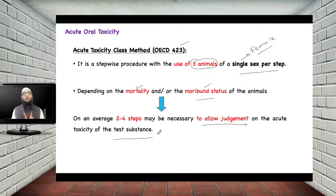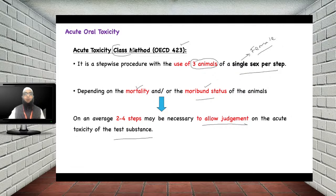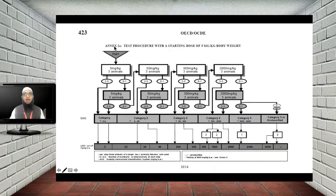Since this method helps you classify a drug into a particular toxicity class, it is called the acute toxicity class method. Let us now see how this study is conducted.